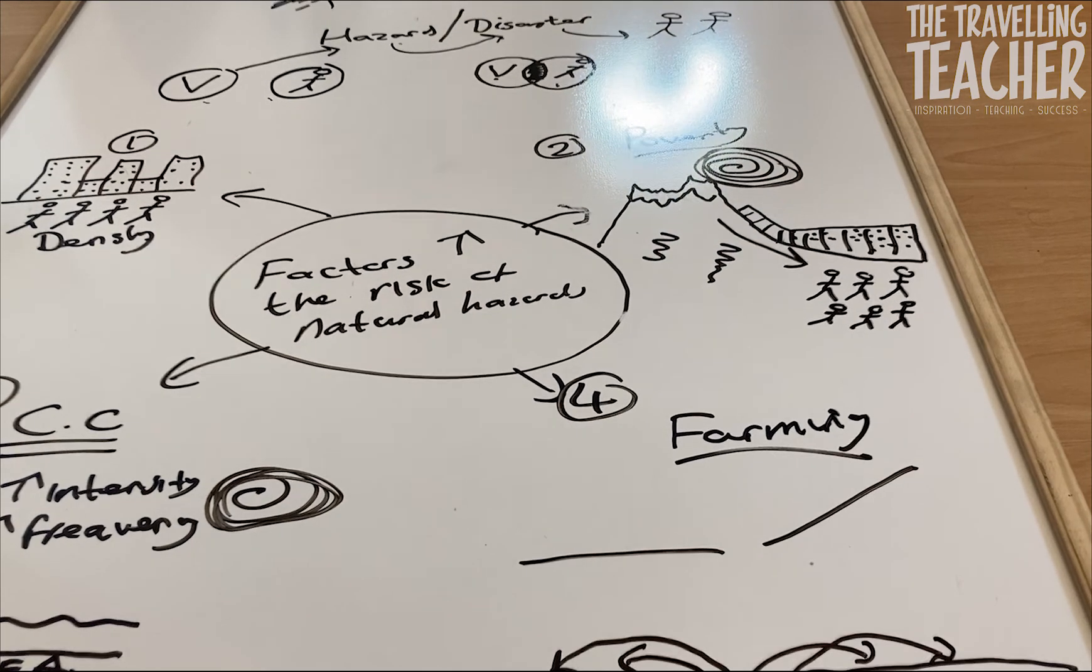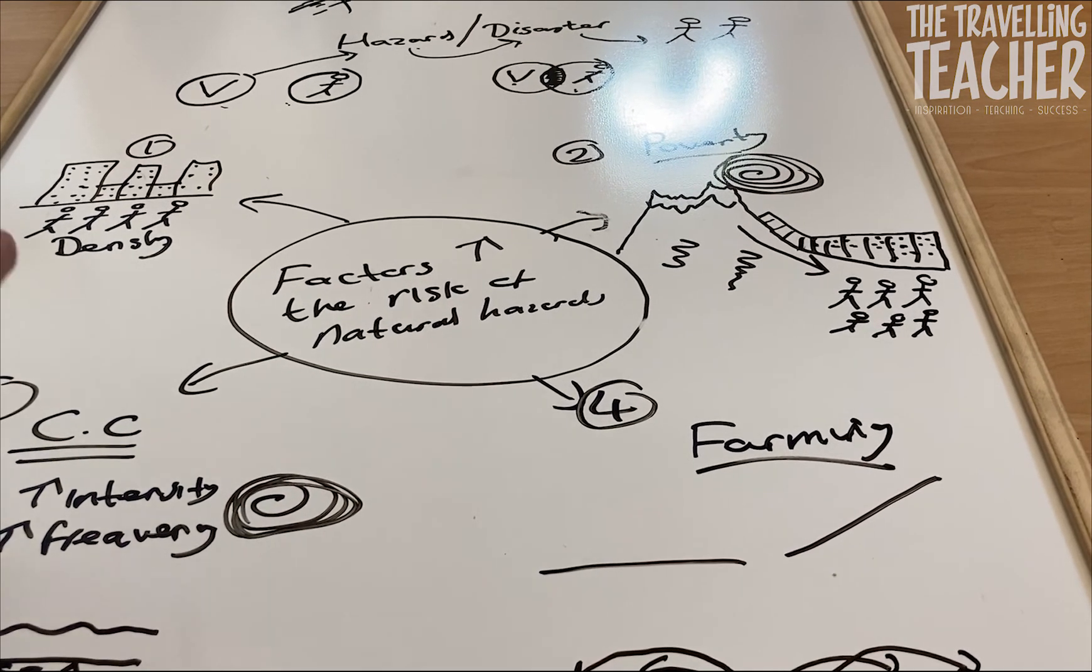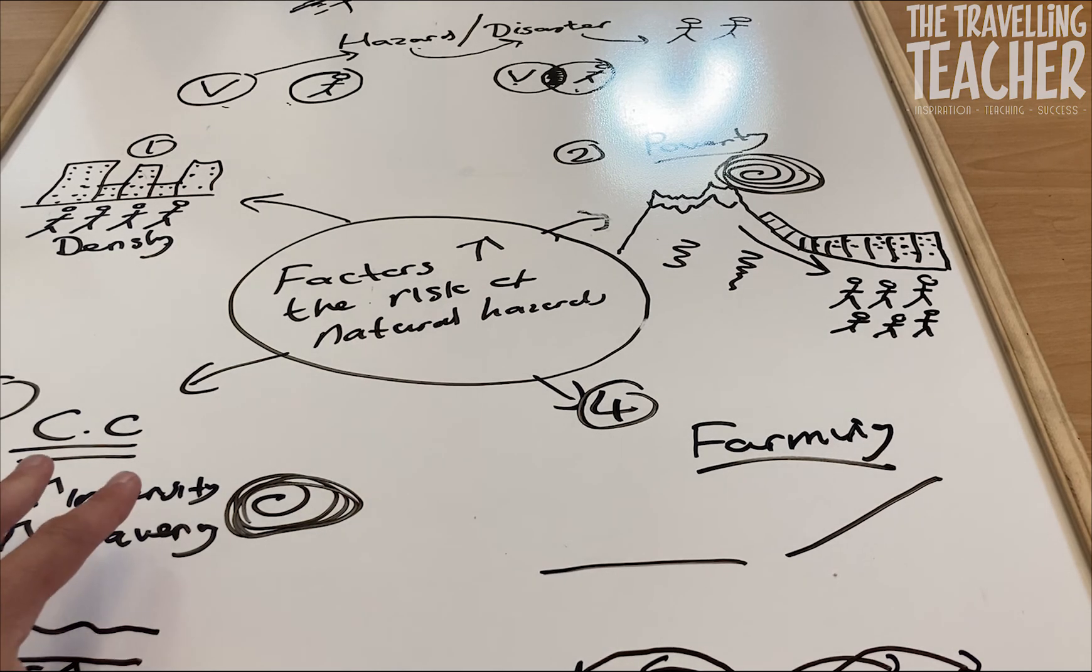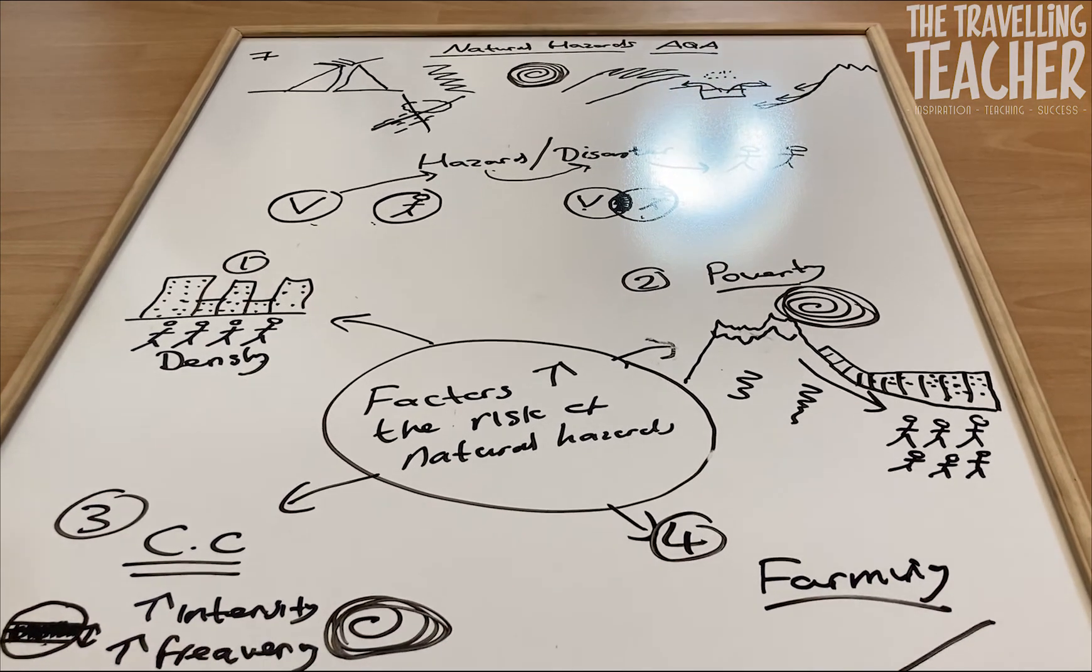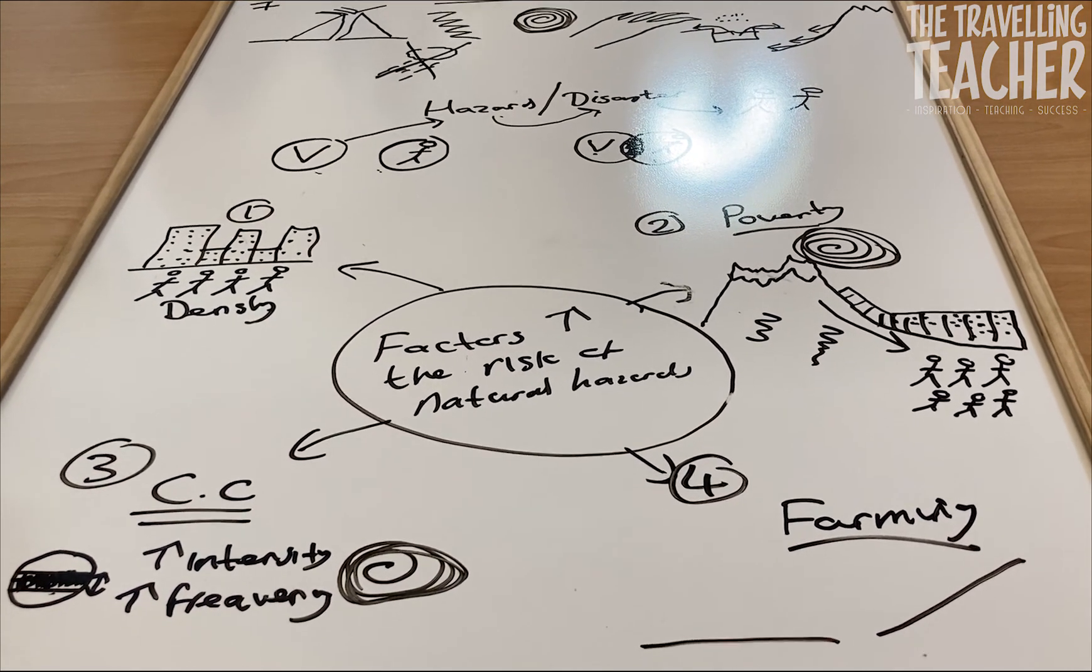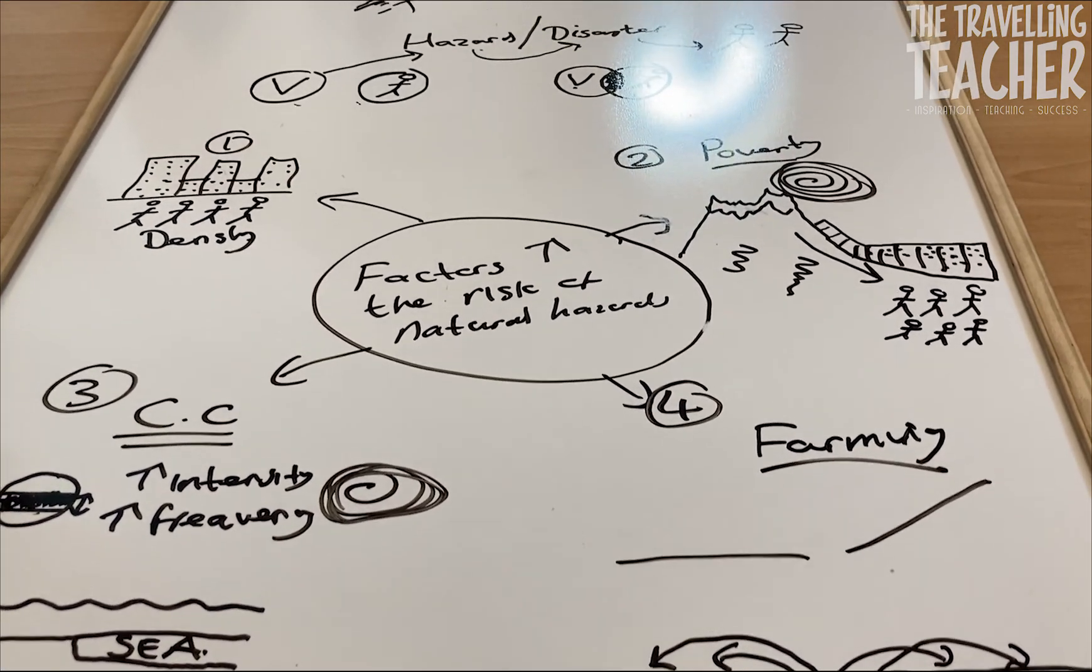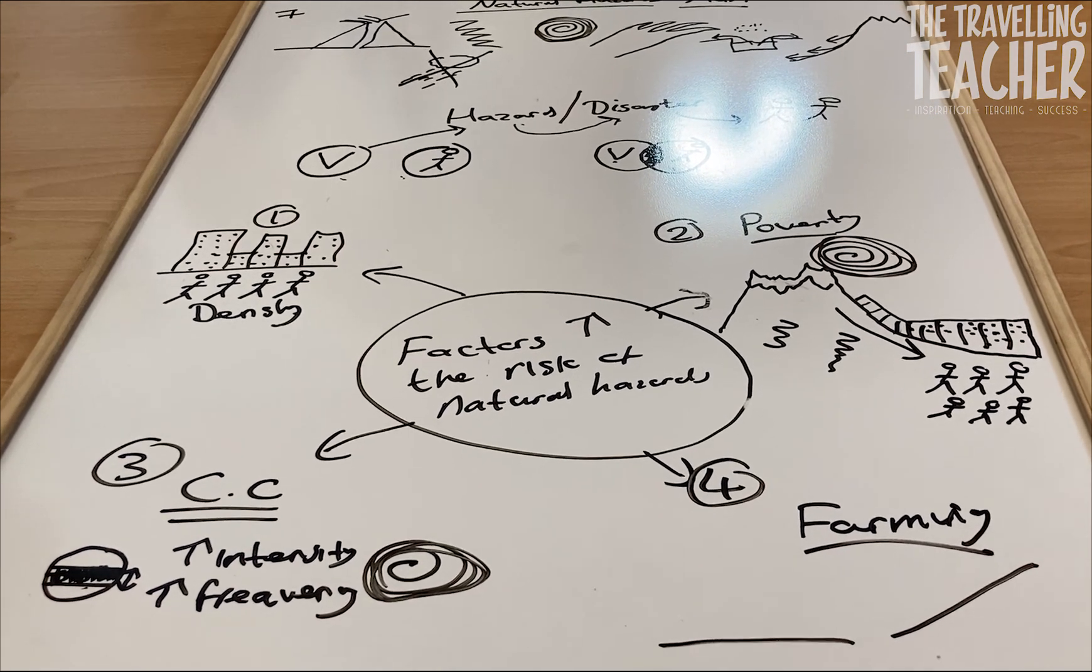So there you have it ladies and gents, the four factors which increase the risk of natural hazards. You've got urbanisation, poverty, climate change and farming. So hopefully that was useful. If it was useful please do subscribe to this channel, like this video, add a positive comment down below, and do check out my other videos which will help you with AQA GCSE geography. Thanks for watching.